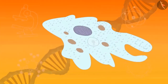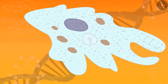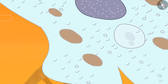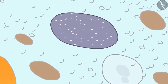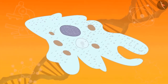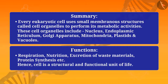In single-celled organisms like amoeba, the food vacuole contains the food items the amoeba has consumed. In some unicellular organisms, specialized vacuoles also play important roles in expelling excess water and waste from the cell. So in this video we learned about different cell organelles: nucleus, endoplasmic reticulum, golgi apparatus, mitochondria, plastids, and vacuoles.